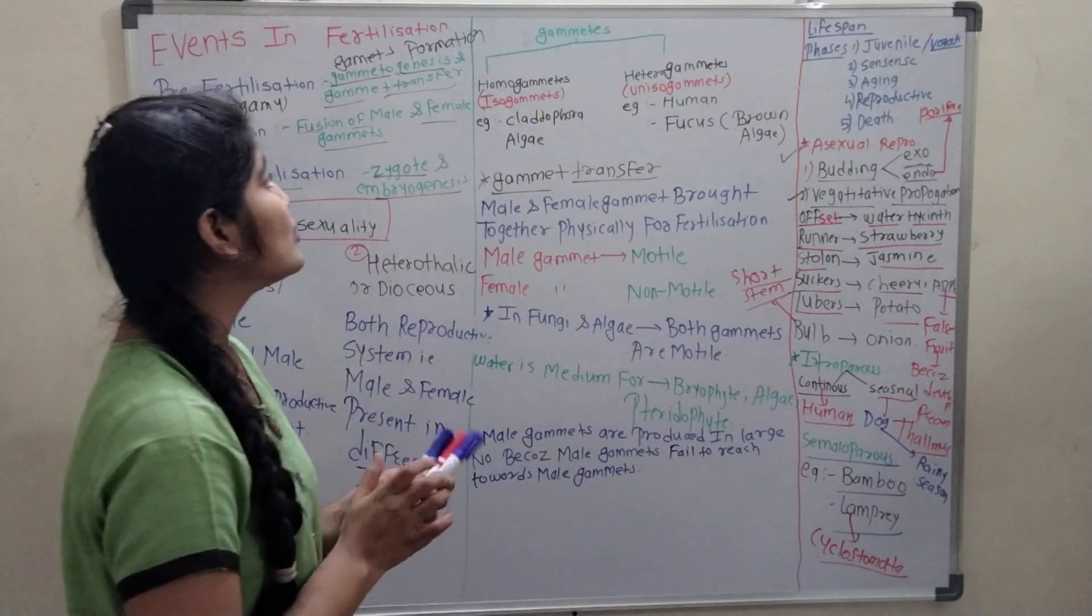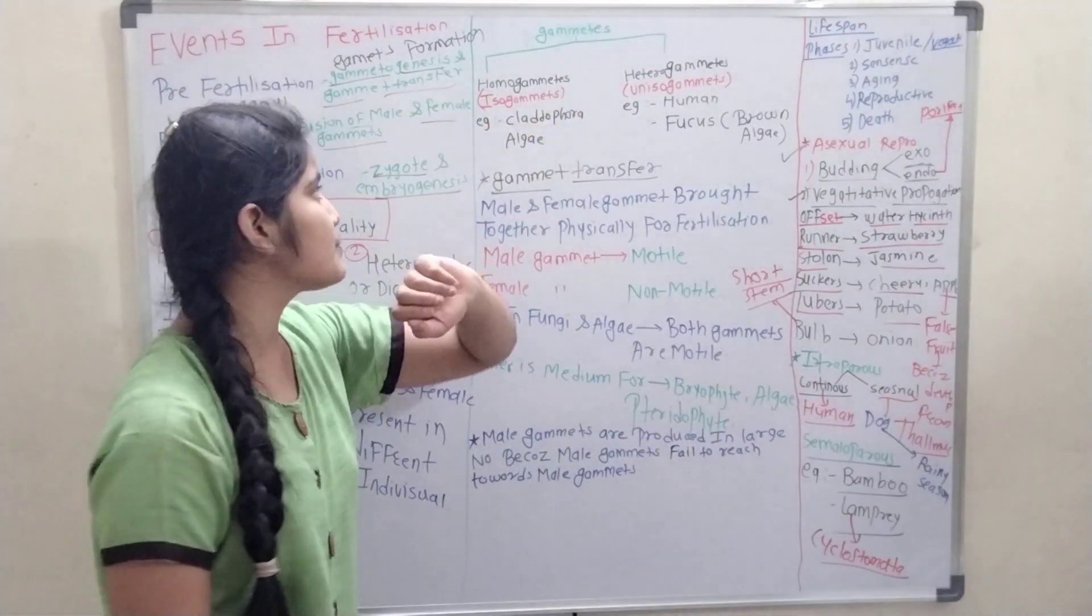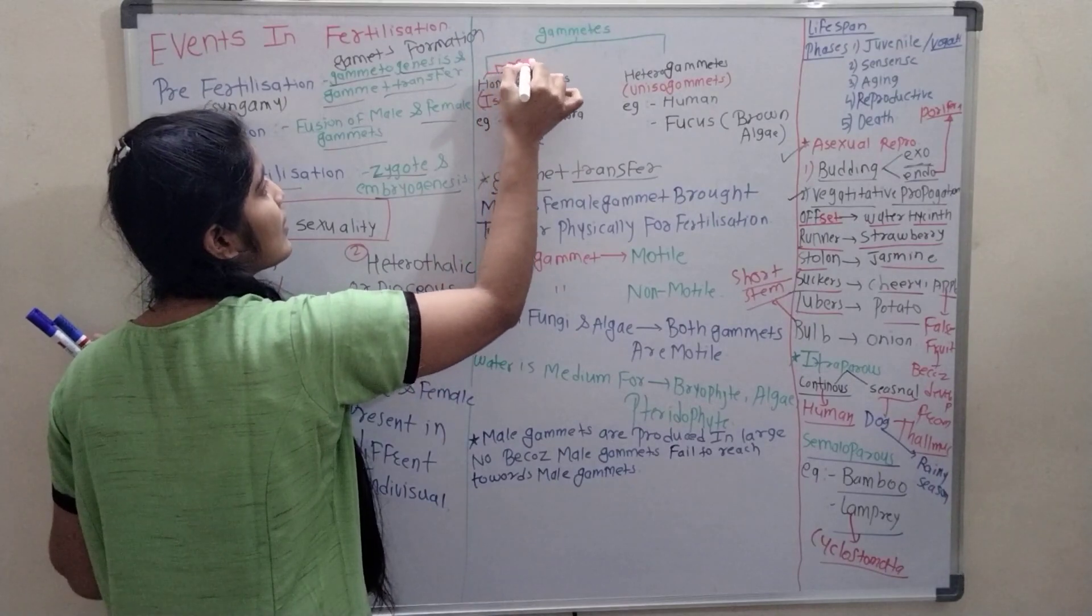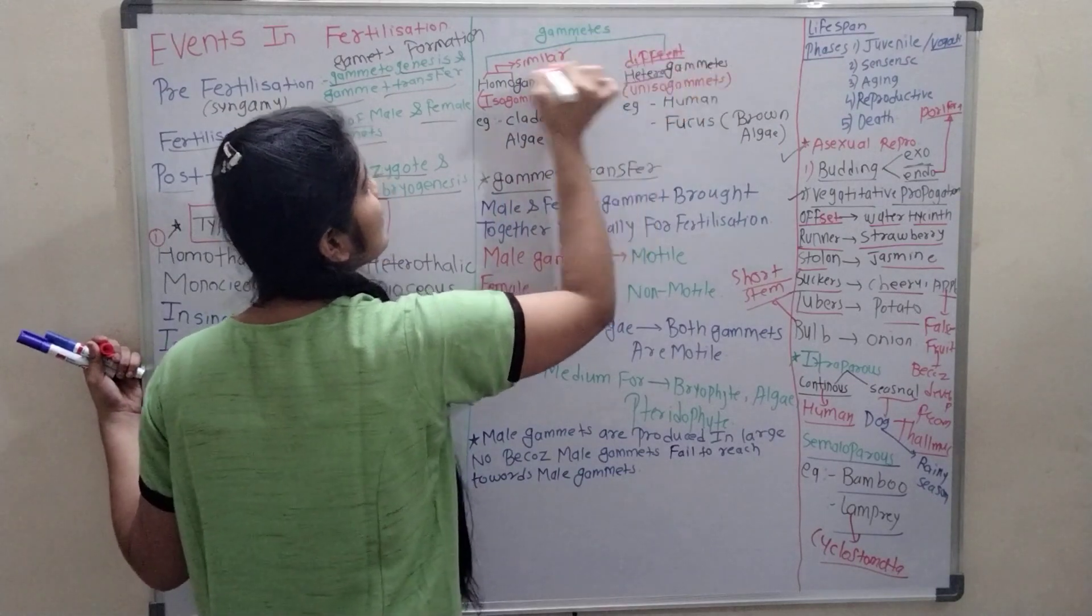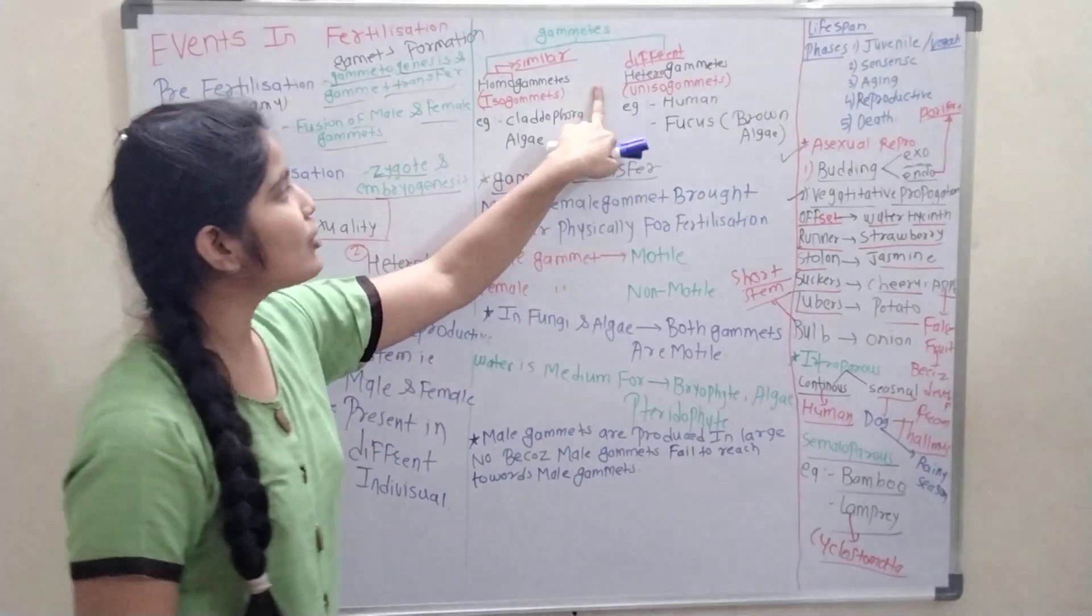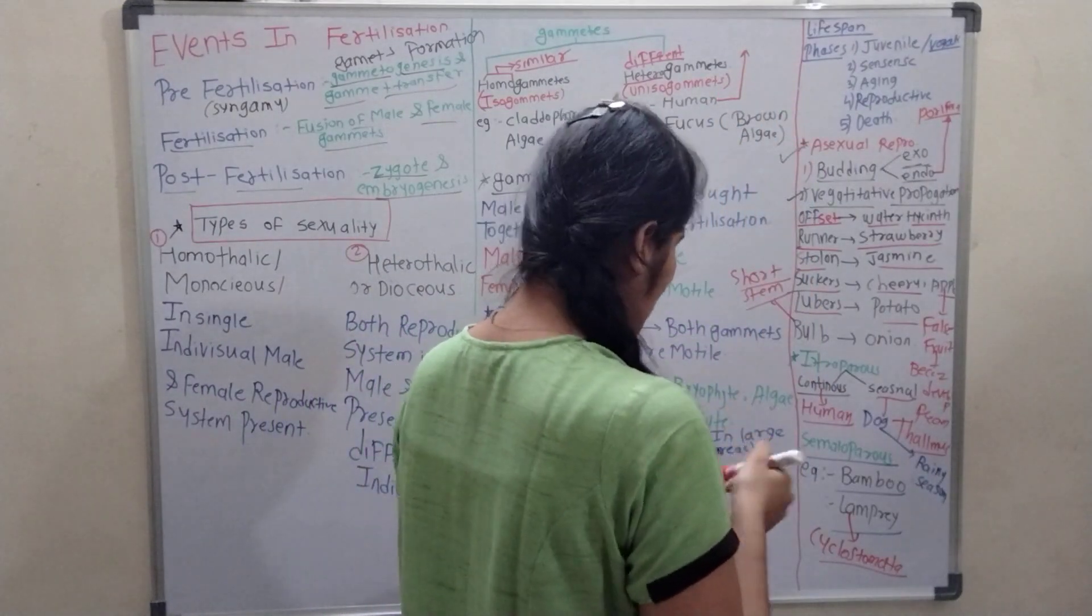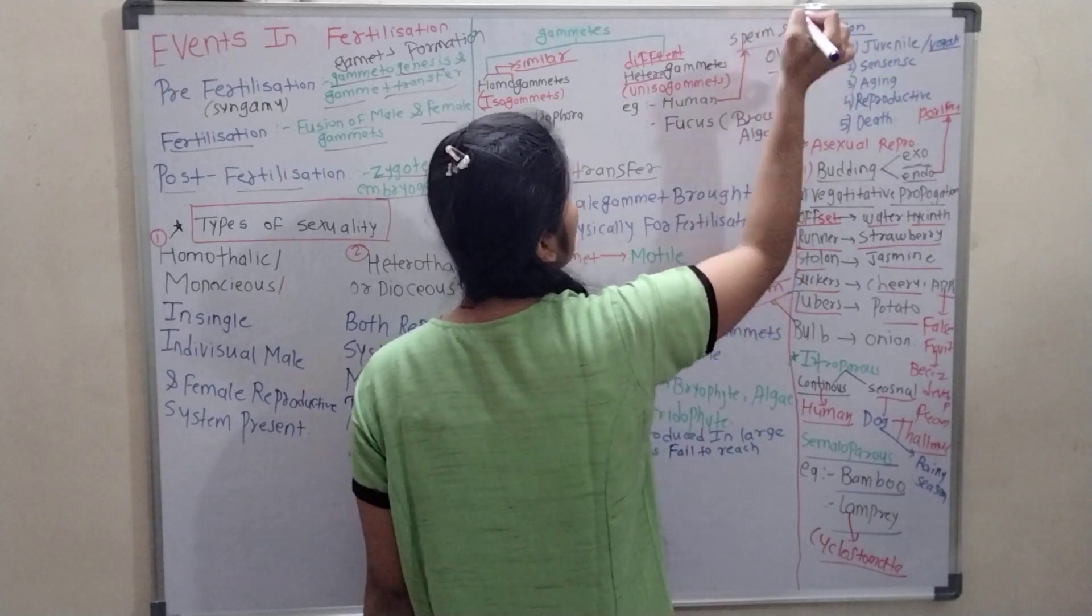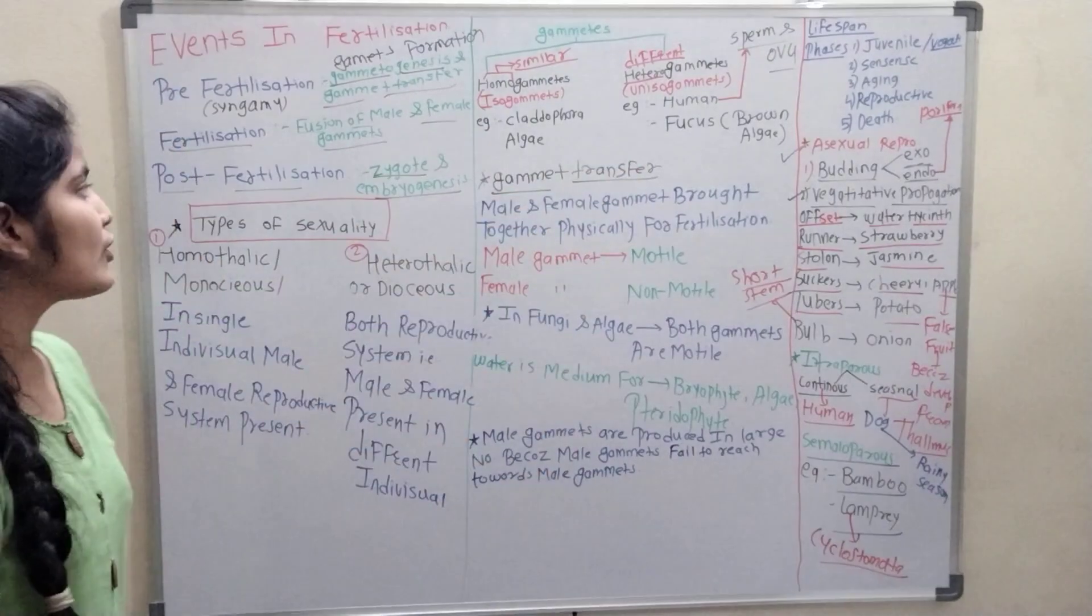How many types of gametes are present? There are two types: homogametes and heterogametes. These are interchangeably known as isogametes and anisogametes respectively. Homo means similar, hetero means different. Homogametes in Clamydophora and algae. In heterogametes, human is a good example. In human, sperm and ova, these are different gametes. Then in Fucus, the brown algae, also heterogametes are present.